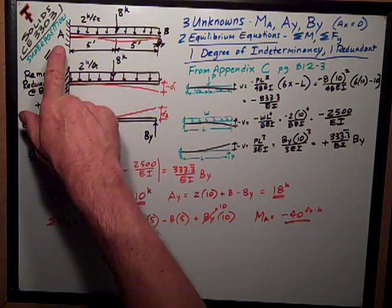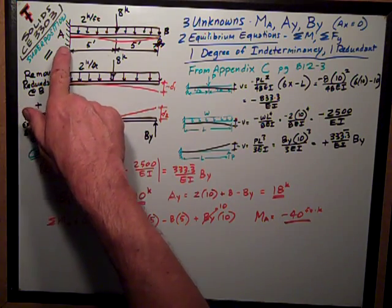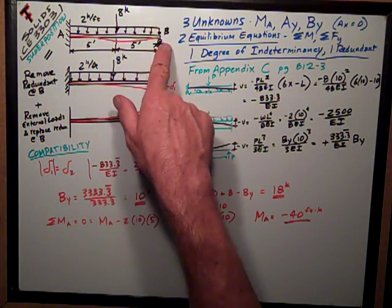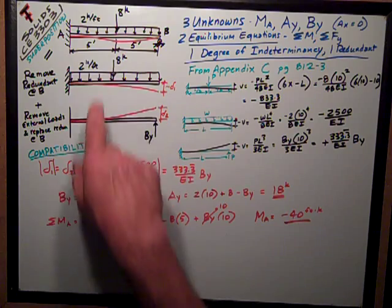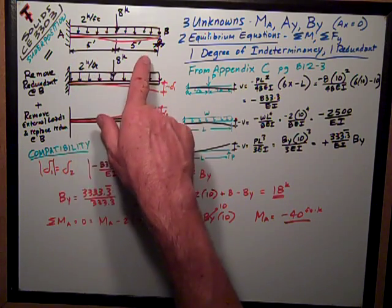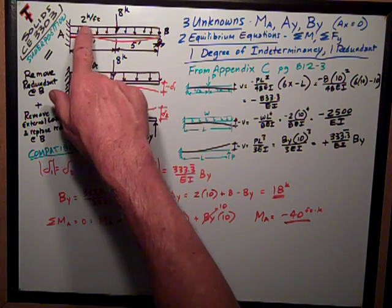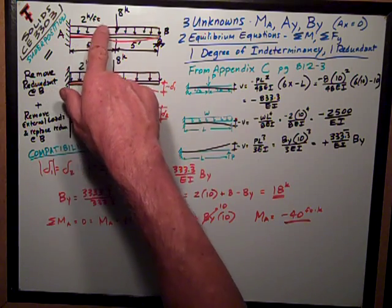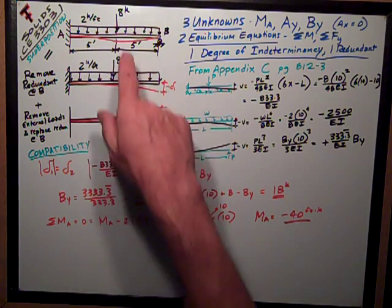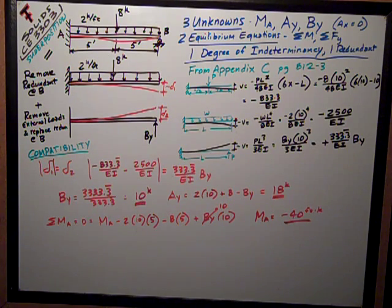The setup is a cantilevered beam, a propped cantilever, with these dimensions: 10 feet long, uniformly distributed load of 2 kips per foot, and a mid-span concentrated force of 8 kips.